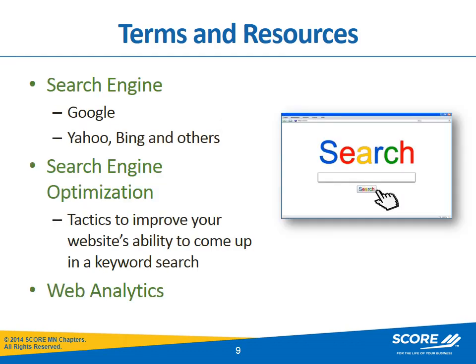Search engines include Google, Yahoo, Bing, Ask, and other resources. Viewers type in what they are looking for in the search bar and results are displayed, allowing them to link to the most appropriate match for their search term or phrase. Search engine optimization, or SEO, includes the elements on your website and other tactics that allow your website to be displayed in search results. We cover this in detail in one of the other webinars in this series. Your website vendor will provide the necessary features to assist you with SEO.